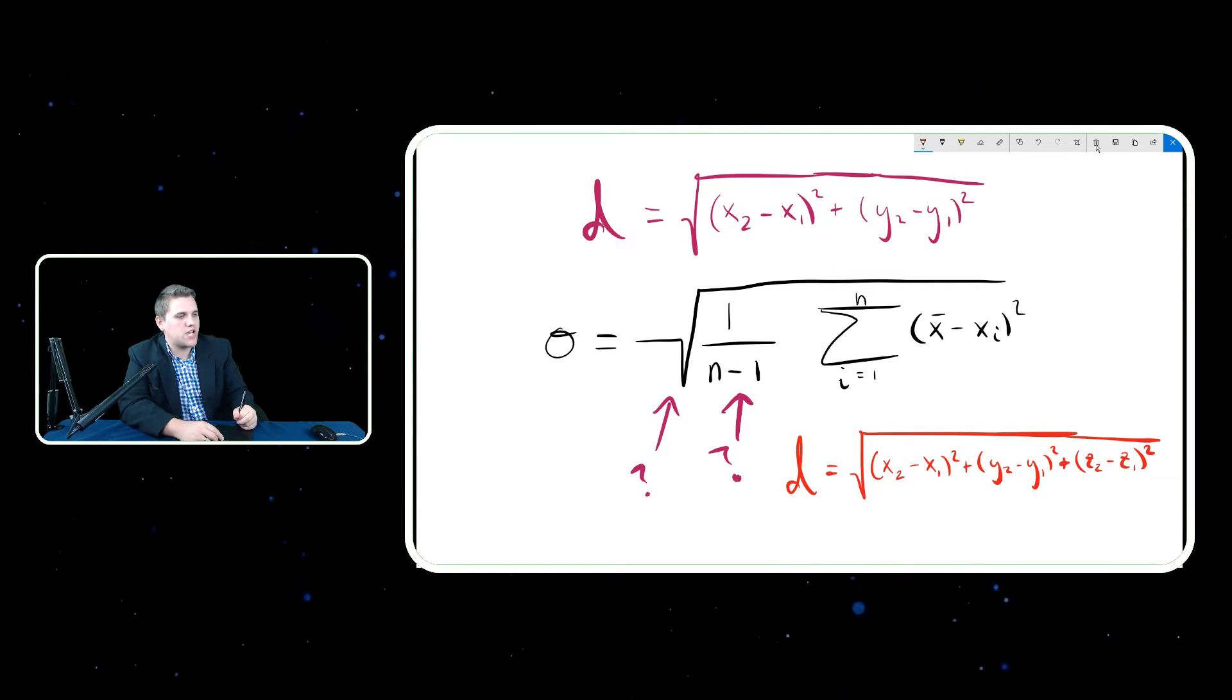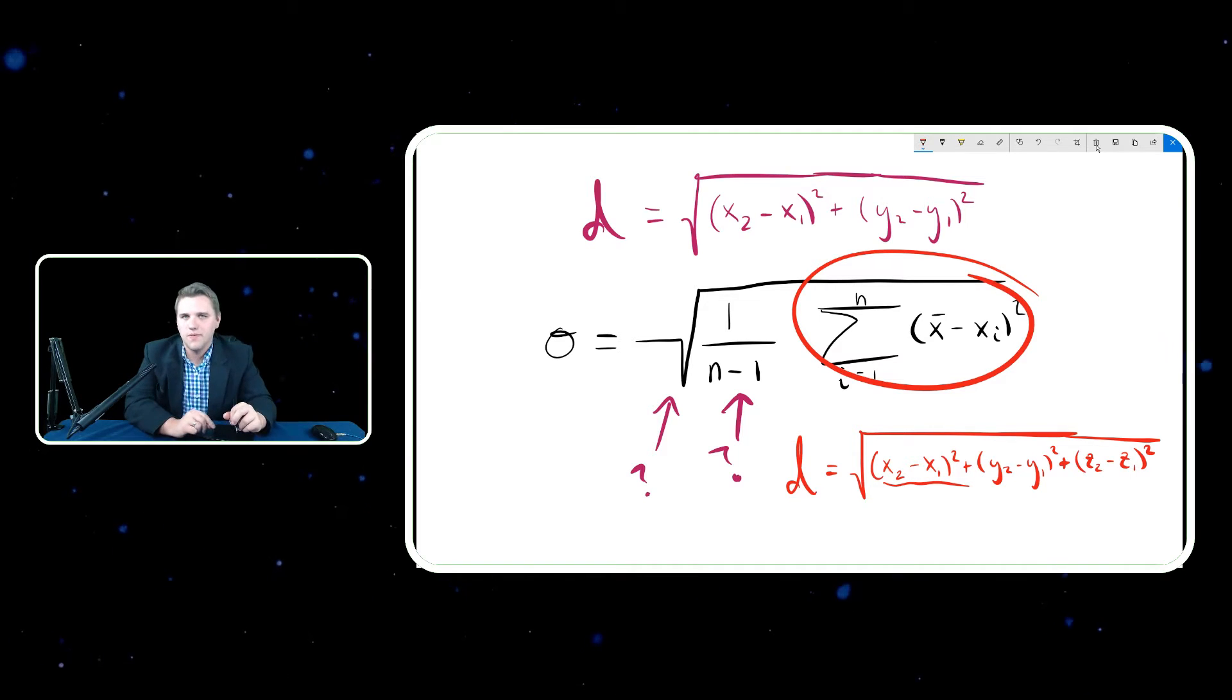So that's the distance formula in three dimensions. So if you notice, what we're doing is we're taking all these distances, squaring them, and adding them all up together. That looks a lot like what's going on there.